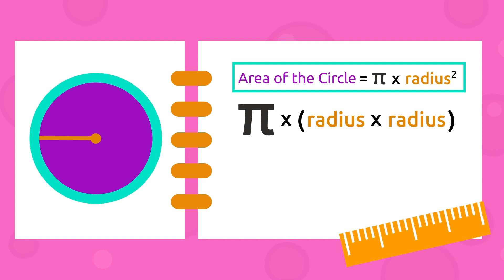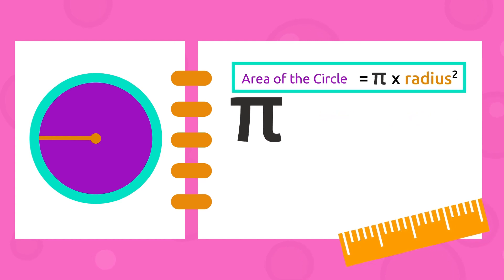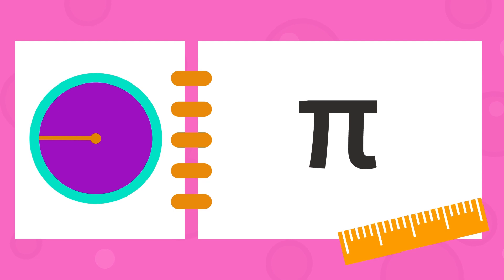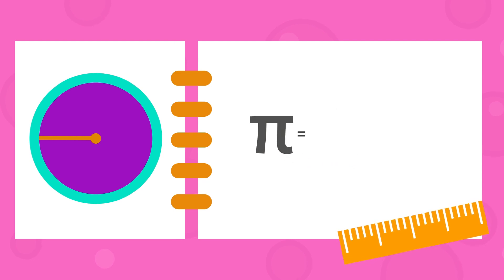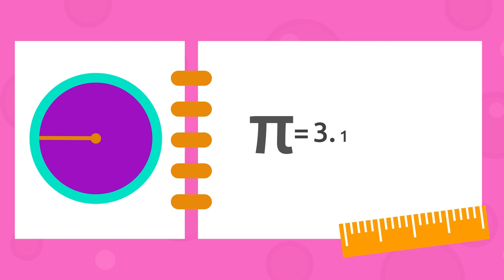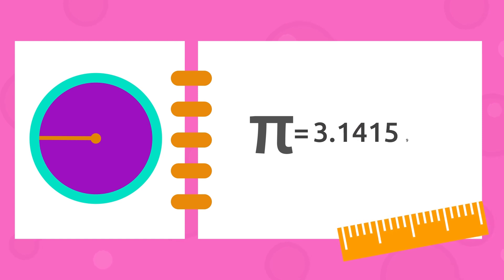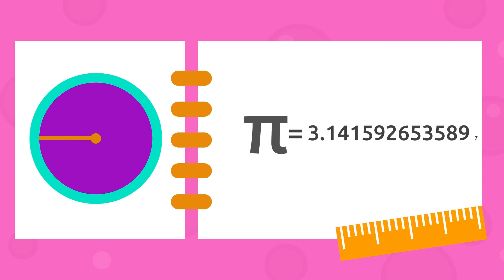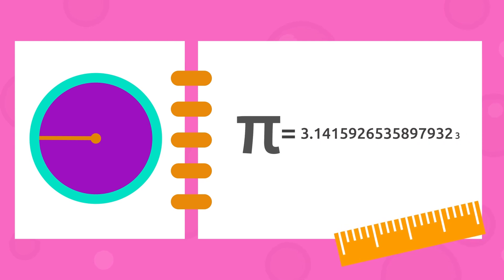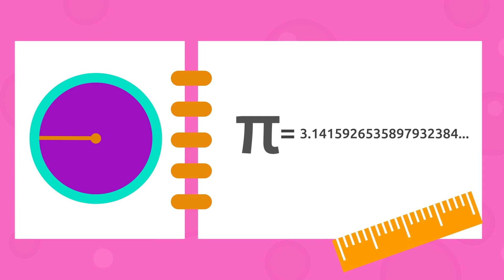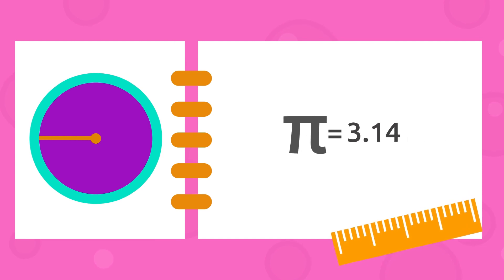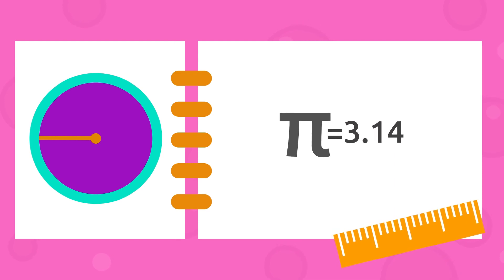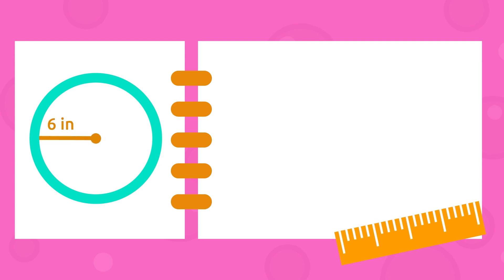Remember that for every circumference in the world, the number pi is represented by the Greek letter π. It's an infinite number: 3.14159265358979323846... The digits go on and on. In everyday life, this number is shortened to 3.14 to express it in a simple way. Let's practice — the radius of this circle is six inches.